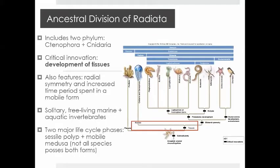The ancestral division of Radiata includes two phyla: Ctenophora and Cnidaria. Some of the critical innovations were the development of tissues, which made the next steps of animal evolution possible. We have radial symmetry — if we draw a line through the center, the right is going to be the same as the left. There's also an increased period of time spent in a mobile form, referred to in our Cnidaria as a medusa — think of that as our typical jellyfish. These are solitary free-living marine and aquatic invertebrates. Phylum Cnidaria includes corals, anemones, jellyfish, and box jellyfish, while phylum Ctenophora refers to comb jellyfish.